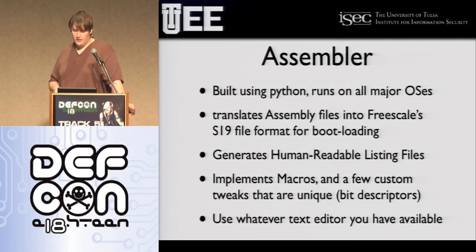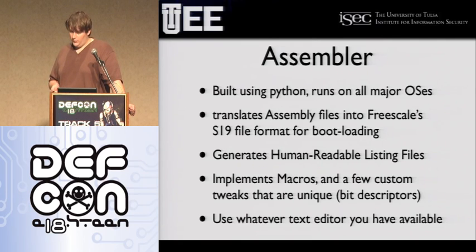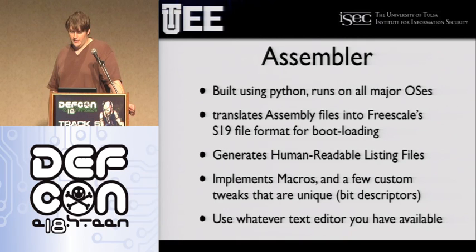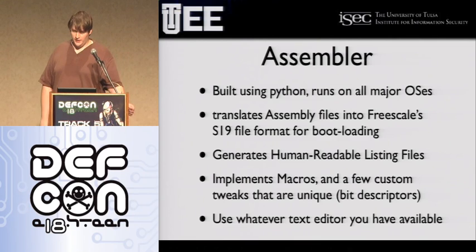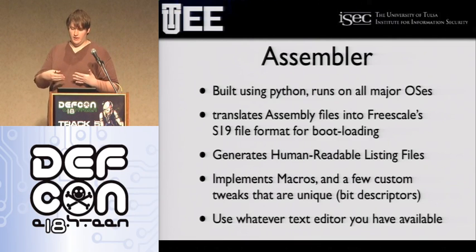The assembler we've written is written in Python. You can download it off the website — it's on the conference CD. You just run the Python file with an ASM file which is just assembly instructions, and it generates the S19 which is the binary that you upload to the board. The assembler also spits out what's called a listing file, which is the assembled binary right next to the code so you can see what it looks like.